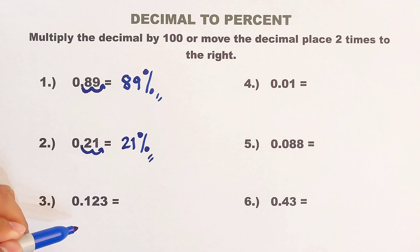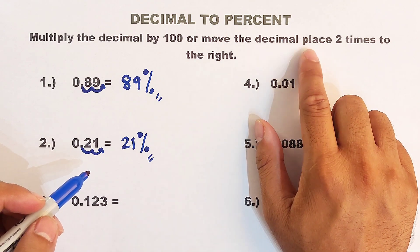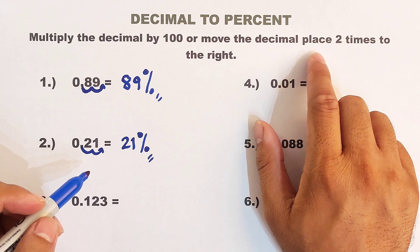Now let's move on with item number 3. In number 3, it is different from the previous examples because this one is 0.123. We have 3 decimal places to the right. Now, what is the equivalent percent of this? We need to stick to the process. We will move the decimal place two times.